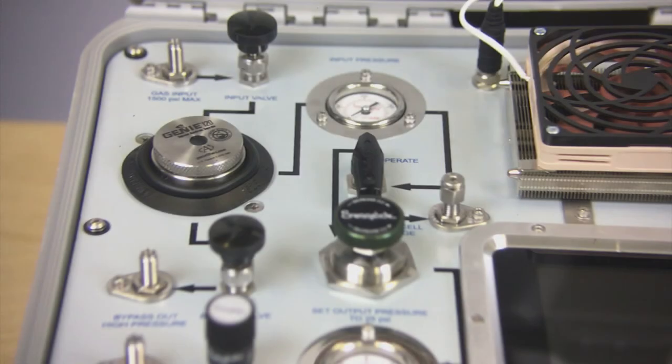The DuPort does not require any routine maintenance if operated properly and within the specified guidelines. The filter in the sample system should be inspected at least every 60 days or more often with richer or dirtier gas.